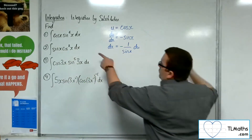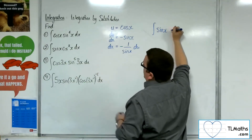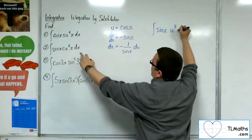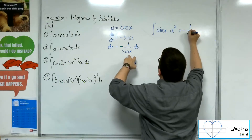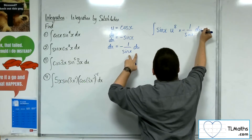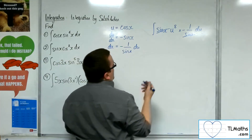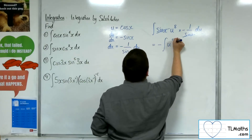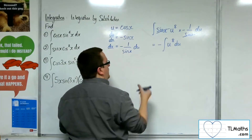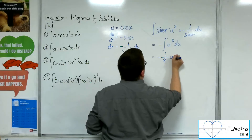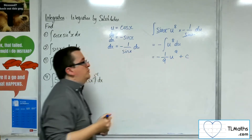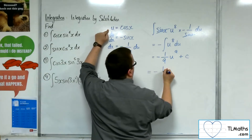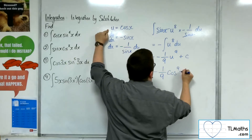So our integral — the integral of sine x times cosine to the 8x — so u to the 8, and the dx is replaced with minus 1 over sine x du. The sine x can cancel top and bottom, much like in the first question, leaving us with minus u to the 8 du. I can bring the minus out of the integral. Add 1 to the power, divide by the new power: minus 1 ninth u to the 9, plus a constant of integration c. Then putting the substitution back in, we've got minus 1 ninth cosine to the 9x plus c.